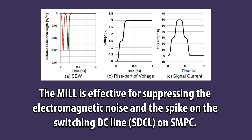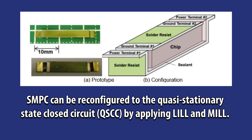The MILL is effective for suppressing the electromagnetic noise and the spike on the Switching DC Line (SDCL) on SMPC. SMPC can be reconfigured to the quasi-stationary state closed circuit (QSCC) by applying LILL and MILL.